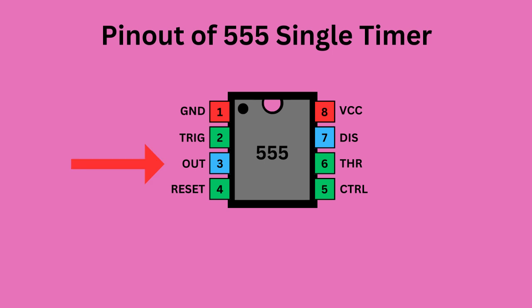Pin 3 serves as the output, providing the timer's operational result depending on its mode: mono-stable, astable, or bi-stable.